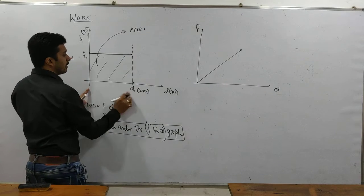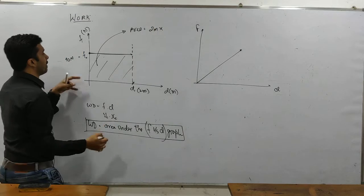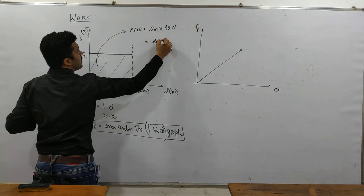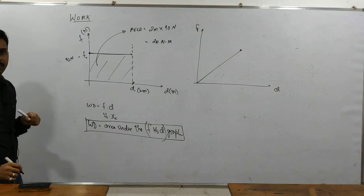What is my length? Length is 2 meter. What is my breadth? 10 Newton. Answer is 20 Newton meter. Check your friends.